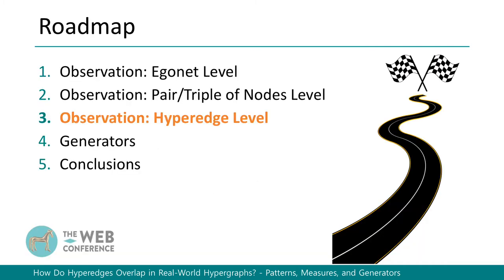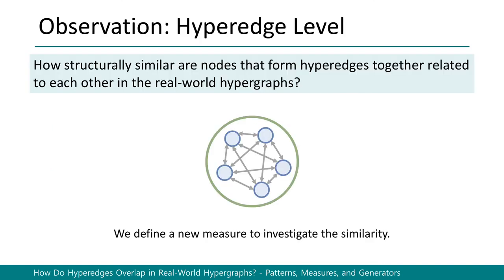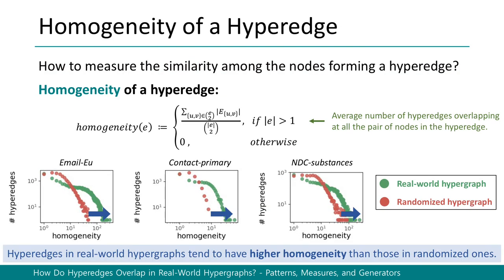Now let's move on to our final observation. Our question is: how structurally similar are nodes that form hyper-edges together in real-world hypergraphs? In order to answer this question, we define a new measure to investigate the similarity. We define homogeneity of a hyper-edge, which is the average number of hyper-edges overlapping at all pairs of nodes in the hyper-edge. Compared to hyper-edges in random hypergraphs, those in real-world hypergraphs tend to have higher homogeneity.